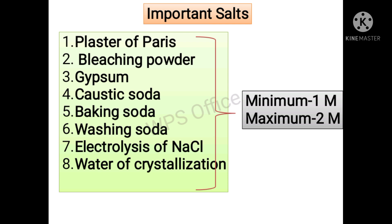Water of crystallization is a very important topic. For example, copper sulfate dot 5H2O - water of crystallization is 5. There are chances, so you can score maximum two marks minimum one mark.